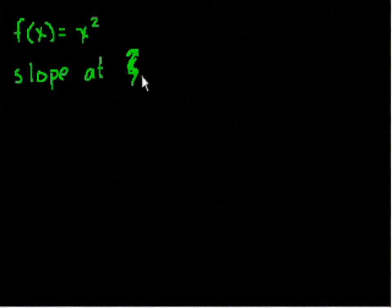So let's say I had the function f(x) is equal to x squared. And I want to know, what is the slope of this curve at x is equal to, let's say at x equals 3.